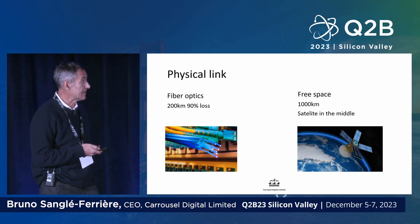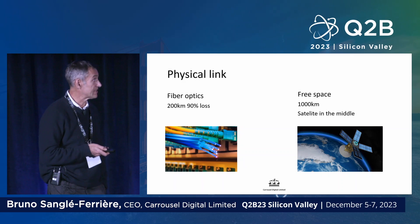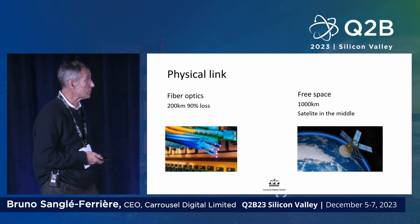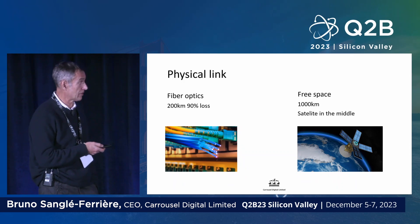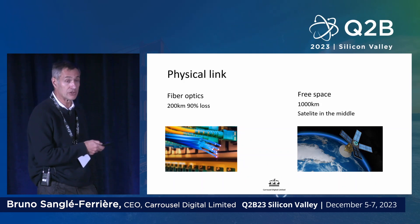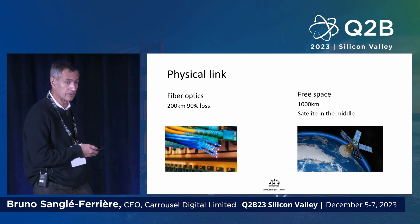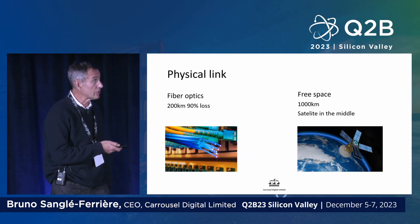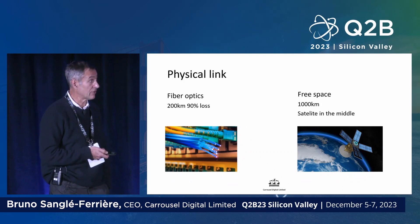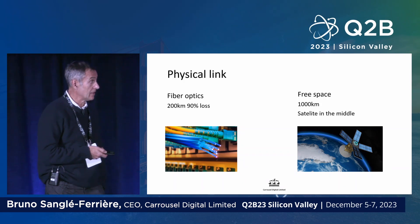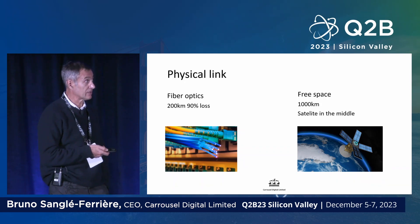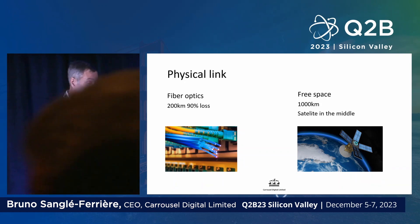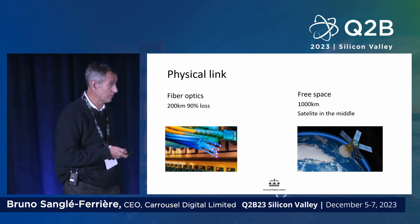This technology can be used for physical links with optical fiber — for example, 200 kilometers with a photon emitter in the middle. You can transmit data with 90% loss and it should work quite well. Or you can use free space: if you can have your photon emitter shooting photons 500 kilometers away, you can transmit information quite far.